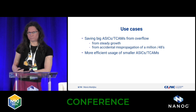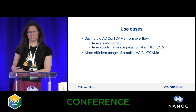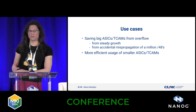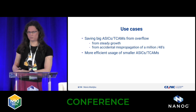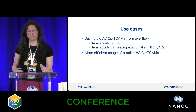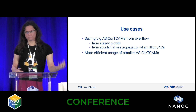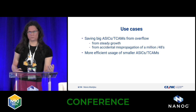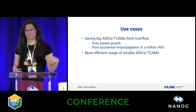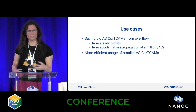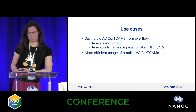What could we do with this? If somebody accidentally mispropagates a million slash 48s, you can just aggregate those back and save your big ASICs or TCAMs from overflow. Also, if you have microtech devices, you can more efficiently use smaller TCAMs — the usage is that they find out which prefixes are used the most and feed those into the TCAMs, while the others are routed by the CPU. So if you want to make your forwarding faster, you can do some aggregation, have more covering routes, and have shorter prefixes.